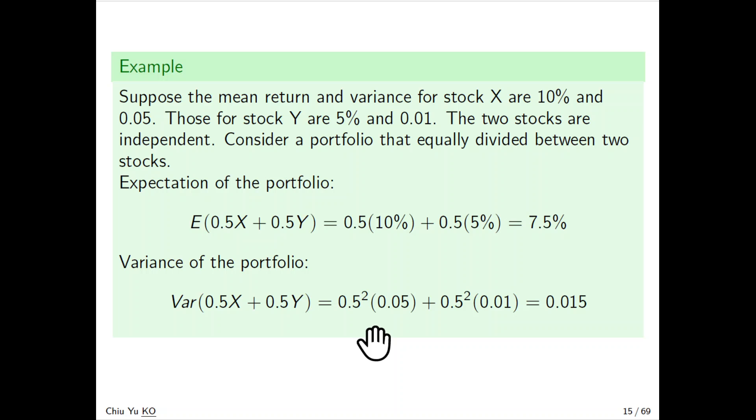Let's see an example where this is useful in calculating portfolio return. Suppose the mean return and variance for stock X are 10% and 0.05, and those for stock Y are 5% and 0.01, and they're independent.